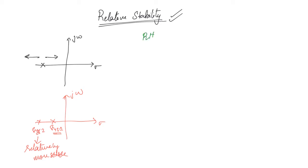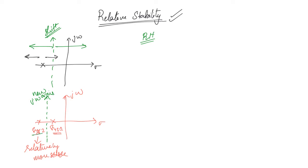What did you do in the RH criterion? You found out the location of roots with respect to the j omega axis — whether they are lying on the left or the right. So, you can also shift this j omega axis to some new point. You can shift it and find out whether the roots are lying to the left or right of this new line. That is how you can find out the relative stability. If you apply the RH criteria with a new j omega axis, you will see that the roots of system two lie to the left of the new axis and the roots of system one lie to the right — mathematically confirming that system two is relatively more stable.